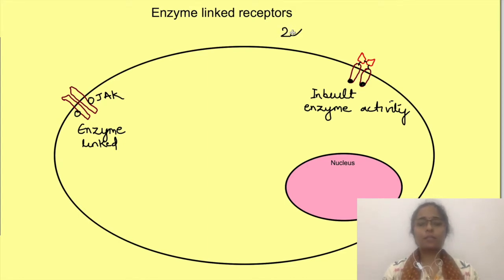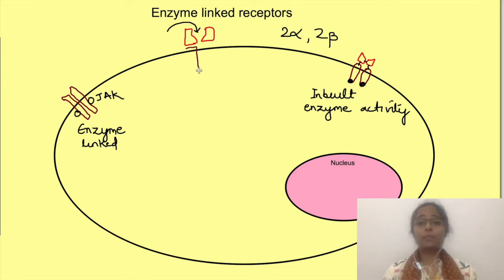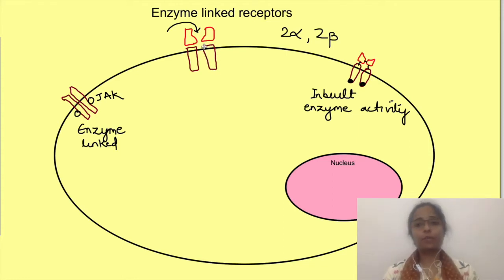Two of these subunits are alpha subunits while the other two are beta subunits. Alpha subunits project outside the membrane — forming the extracellular part of the receptor which has the binding site for insulin. The beta subunits traverse through the membrane and protrude into the cytoplasm. These units are held together by disulfide bonds — between the two alpha subunits and also between the alpha and beta subunits.